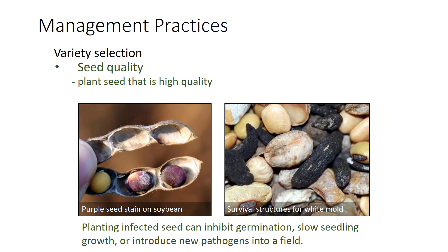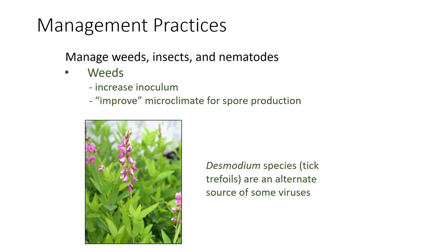Some pathogens affect seed and reduce germination or slow seedling growth. Planting high-quality seed reduces disease. In addition, using high-quality seed may prevent introduction of new pathogens into a field. The left image shows purple seed stain on soybean, which is caused by a fungus leading to Cercospora blight. The right image shows structures for white mold. These survival structures can move with seed and survive in soil for several years. Weed management is also important. Many of the weeds that commonly occur are also hosts of some pathogens. For example, Desmodium species are hosts of bean pod mottle virus that affects soybean. Therefore, these hosts enable the pathogen to produce more inoculum. Furthermore, weeds may improve the microclimate for spore production by increasing relative humidity and/or decreasing light intensity. The image shows Desmodium species. Some viruses can live in the absence of one host by colonizing another host, and when a crop host is present, the virus can move from weed host to crop host in various ways.